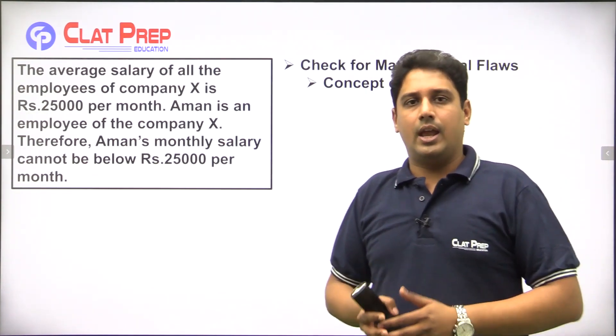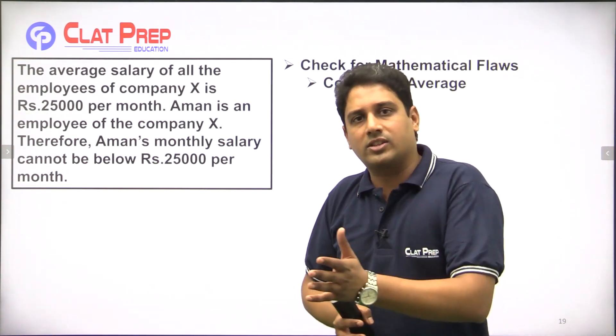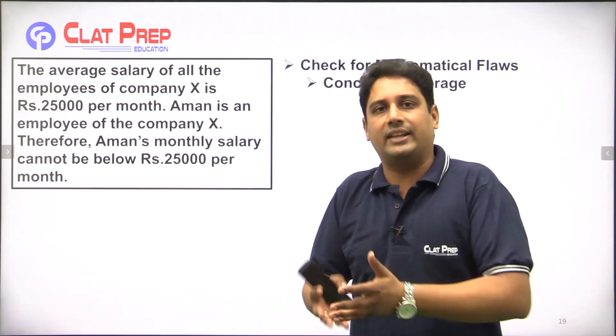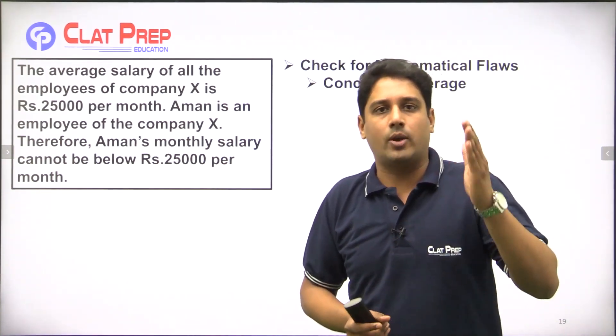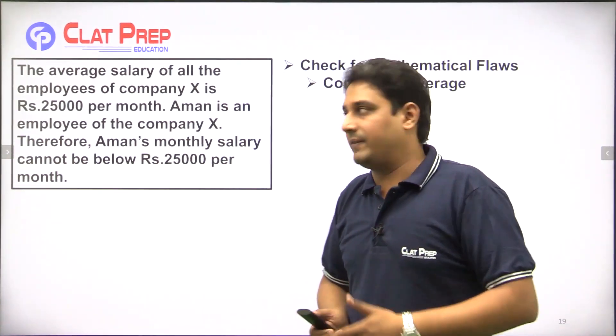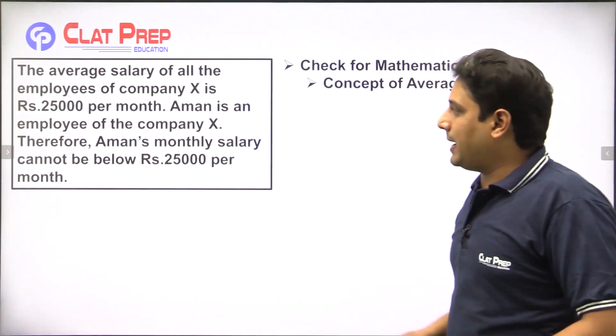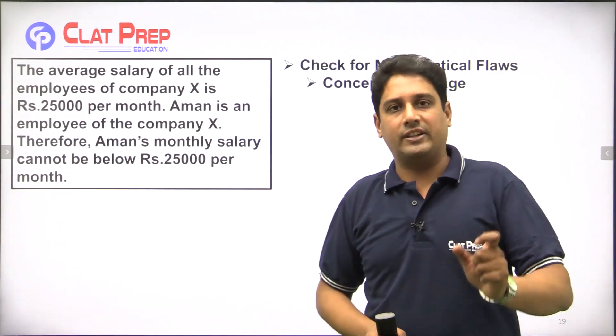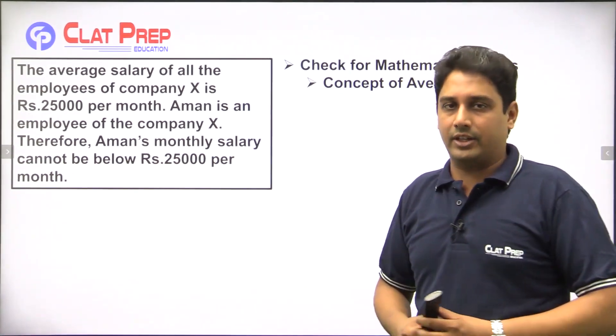Now coming to the next one — mathematical flaws. There are two general common examples: one based on percentage and one based on average. Let me first talk about a flaw which is based on average.